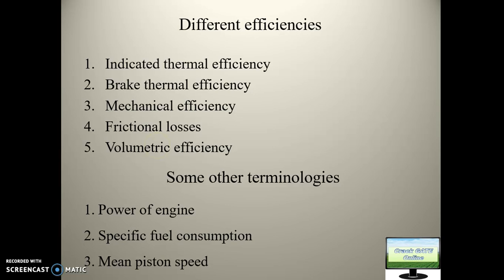The third is mechanical efficiency, which accounts for frictional losses. Mechanical efficiency = brake power / indicated power. Since indicated power = brake power + frictional power, mechanical efficiency also equals brake power / (brake power + frictional power). Frictional losses = indicated power − brake power — whatever power is lost due to friction is found by subtracting brake power from indicated power.